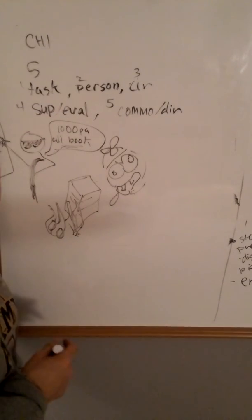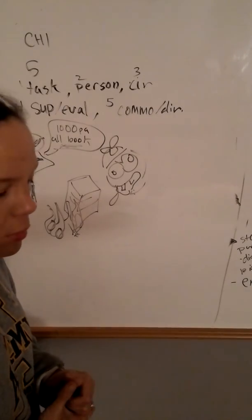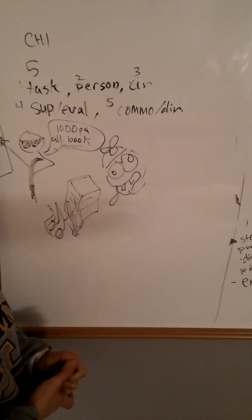So, five rights of delegation. Task, person, circumstances, supervision, and communication. And again, I just referred back to nursing school. So that is the end of chapter one.